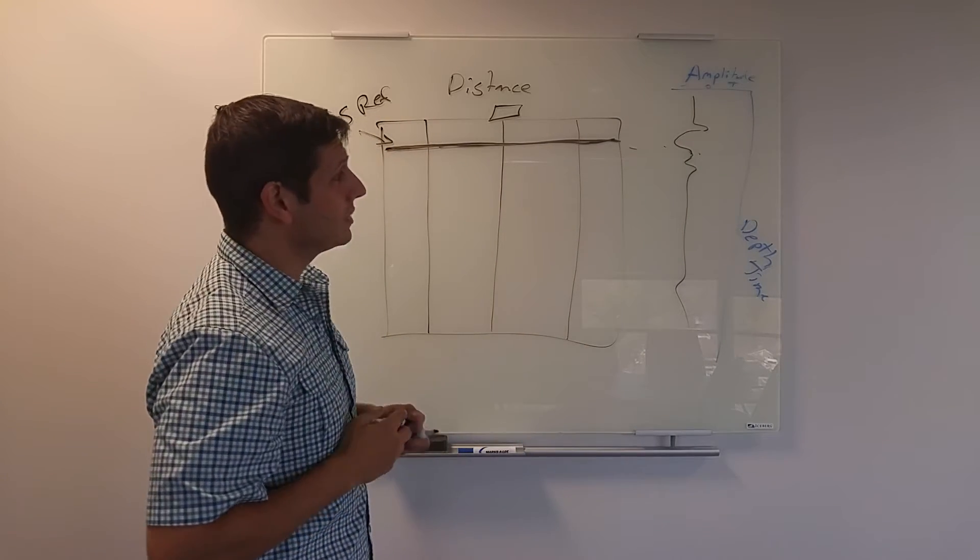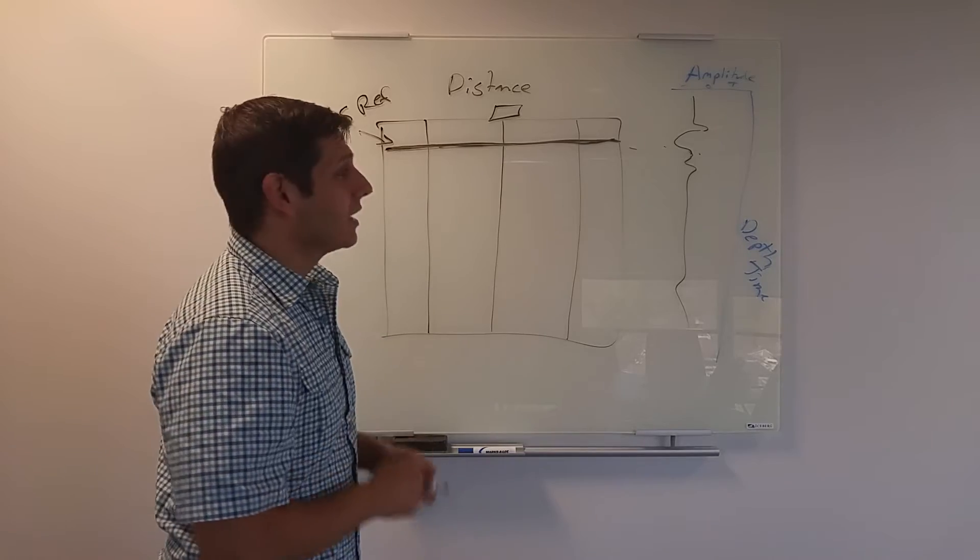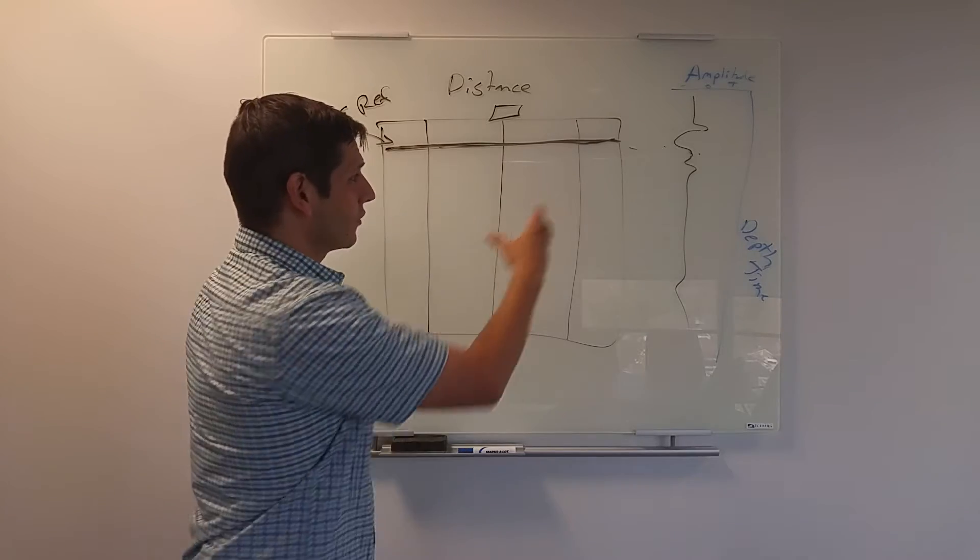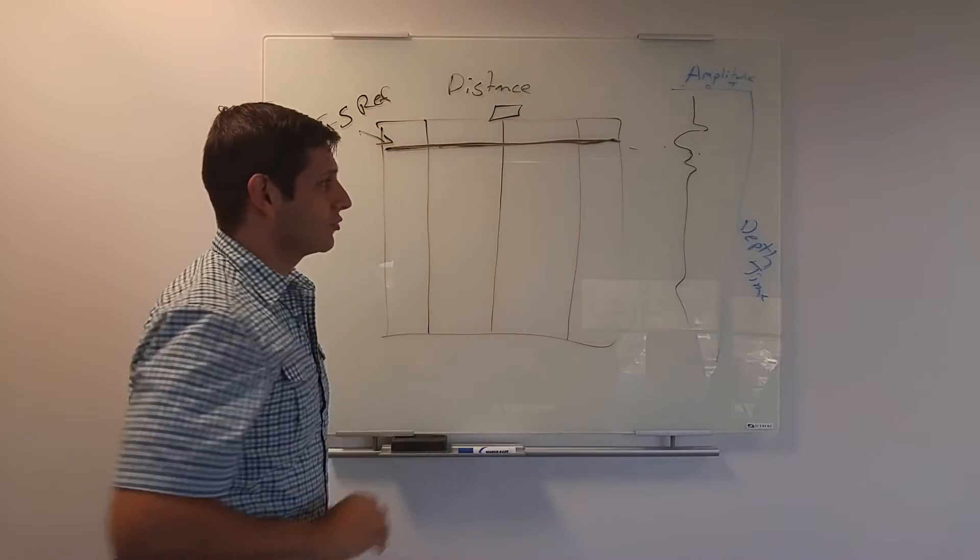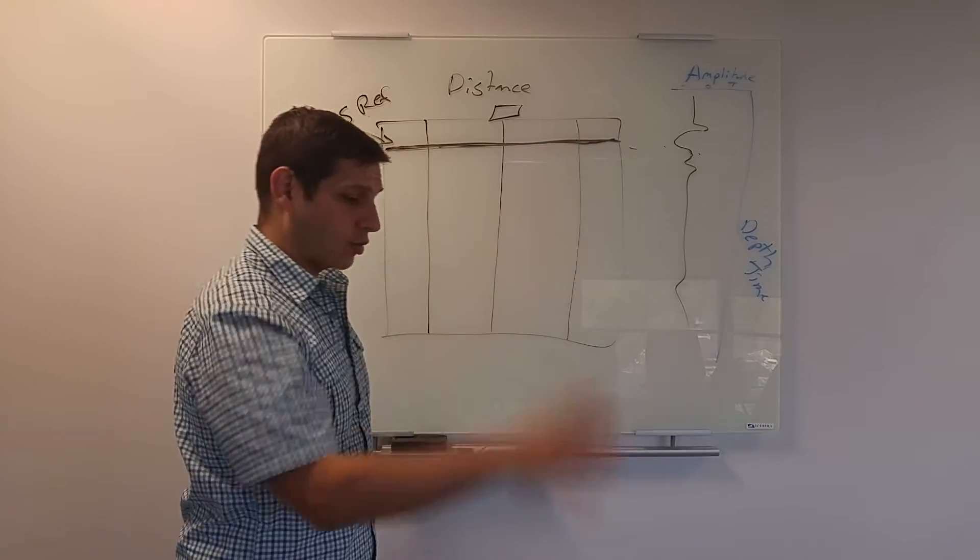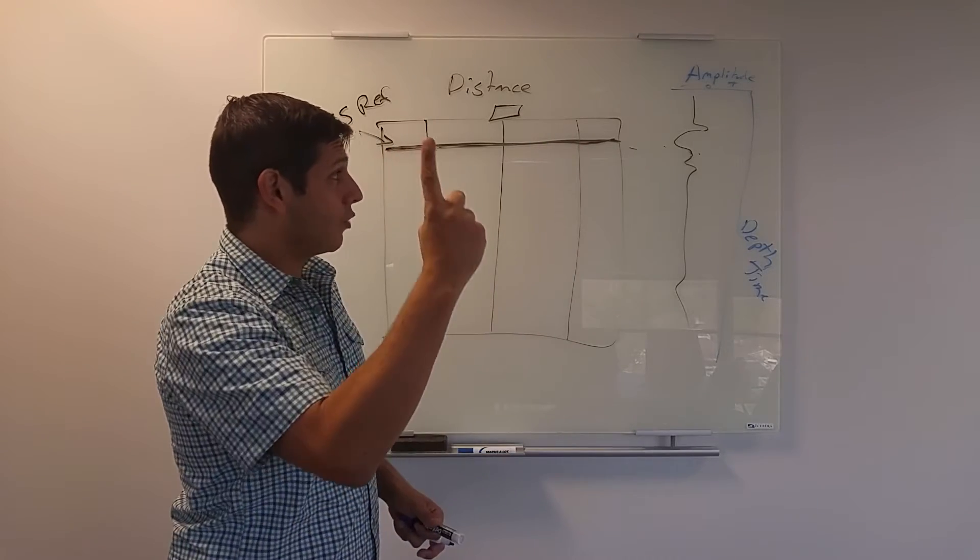That's number one. Amplitude is critical for interpreting the ground-penetrating radar data and interpreting what's going on below the ground surface. So that's benefit number one.